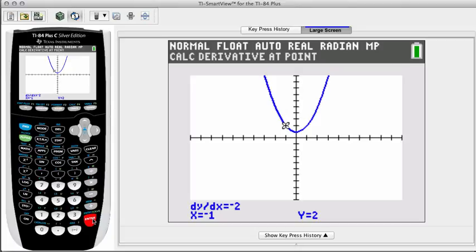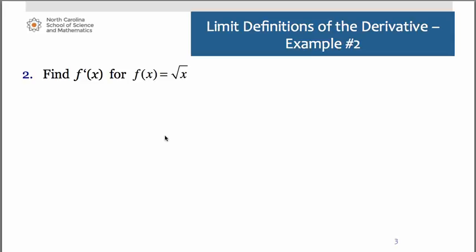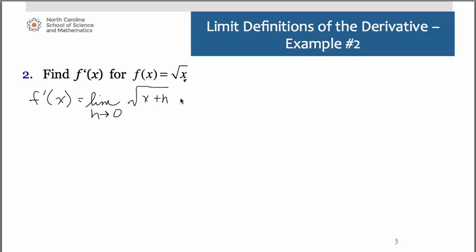Let's take a look at another example. Here we're trying to find f prime of x, the derivative, for f of x equals square root of x. Notice we are not given a specific point, so we're finding a general expression for the derivative at any x value. We have to use the first limit definition: f prime of x equals the limit as h approaches 0 of f of x plus h, which is square root of x plus h, minus f of x, which is square root of x, all over h.